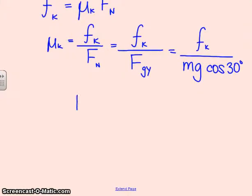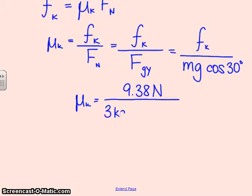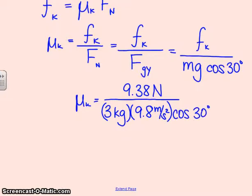So, I'll plug that into my equation. I'll just plug numbers in again. F sub k is what I already solved for, 9.38 newtons, divided by 3 kilograms times a positive 9.8 meters per second squared, times the cosine of 30 degrees. This gives me a coefficient of 0.368.